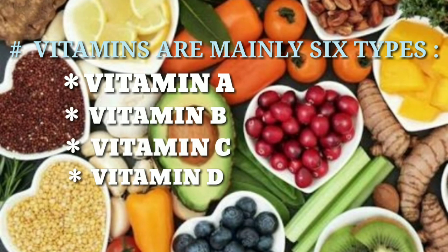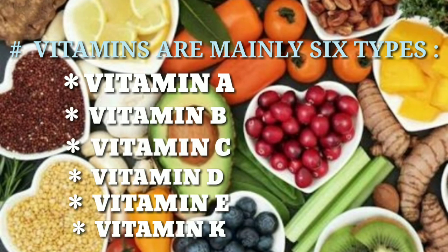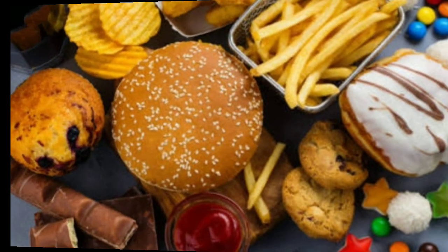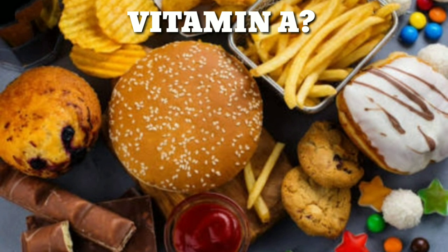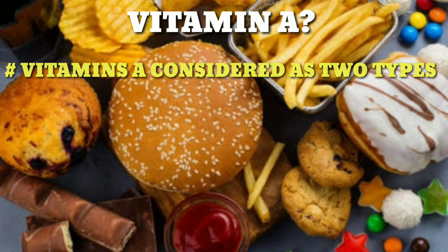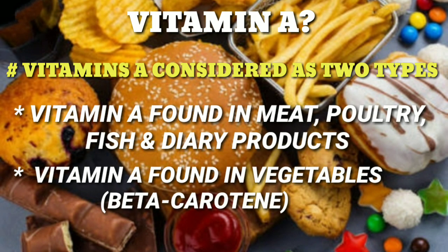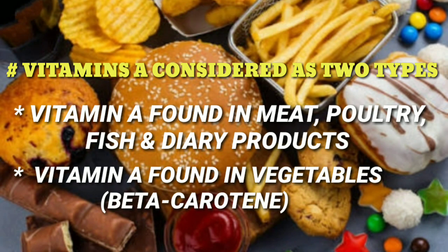Vitamins are mainly six types: Vitamin A, Vitamin B, Vitamin C, Vitamin D, Vitamin E, and Vitamin K. Vitamin A is considered as two types. Vitamin A is found in meat, poultry, fish, and dairy products, and also found in vegetables.